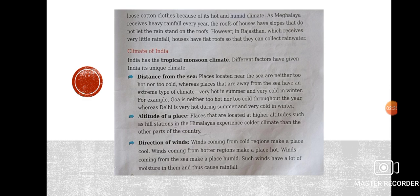The third factor is direction of wind. Wind coming from a cold region makes a place cool, wind coming from a hotter region makes a place hot, and winds coming from the sea make a place humid. Such winds have a lot of moisture in them and thus cause rainfall.